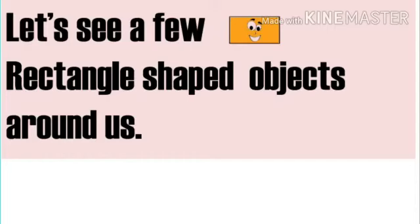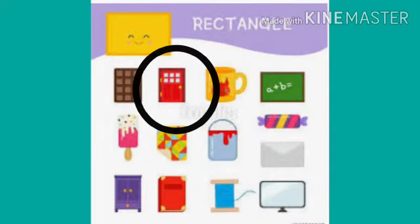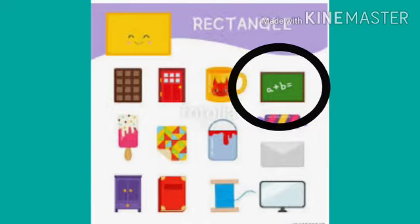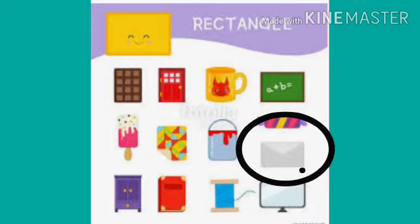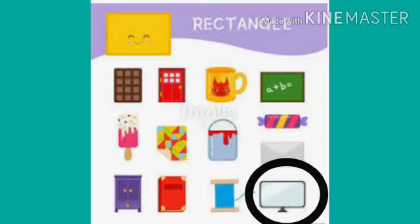Now children, let's see a few rectangle shaped objects around us. A chocolate bar, a window, blackboard, an envelope, a book, a television.